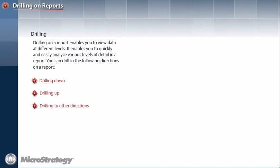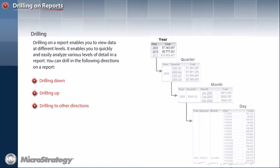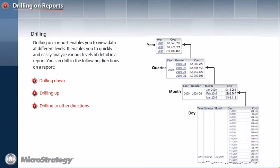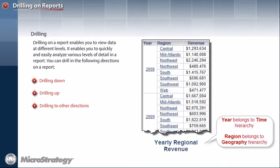Drilling down enables you to access the data at a lower attribute level in the same hierarchy. For example, you can drill down from year to quarter, quarter to month, or even from month to day level. Drilling up enables you to see data at a higher attribute level in the same hierarchy. Drilling in other directions lets you view the data at any level across any hierarchy.